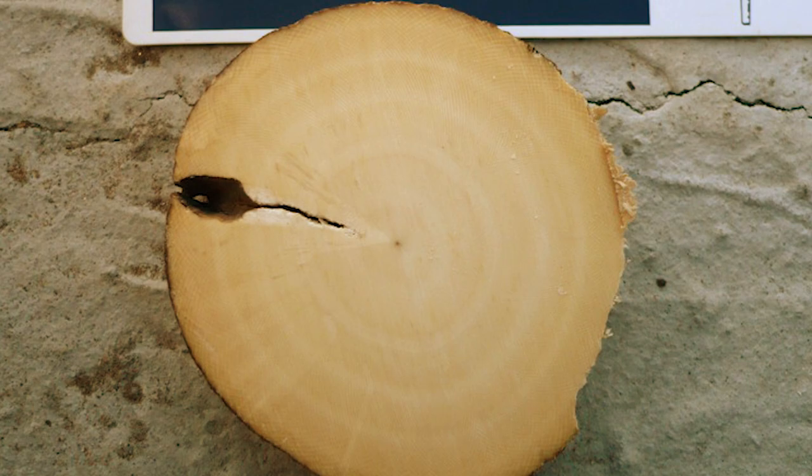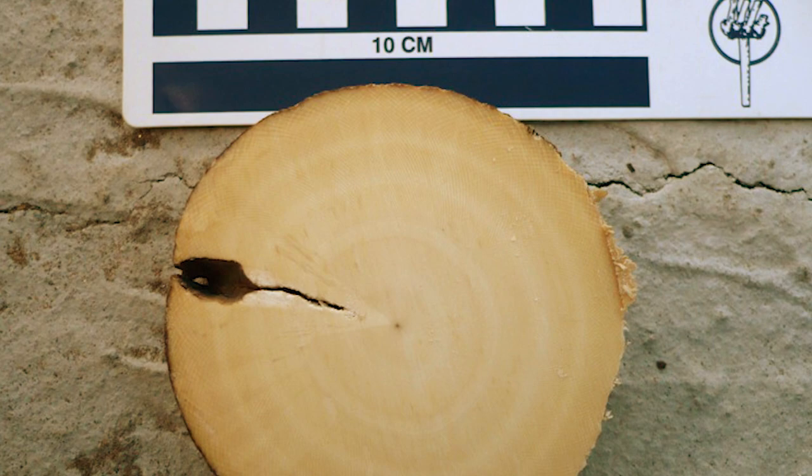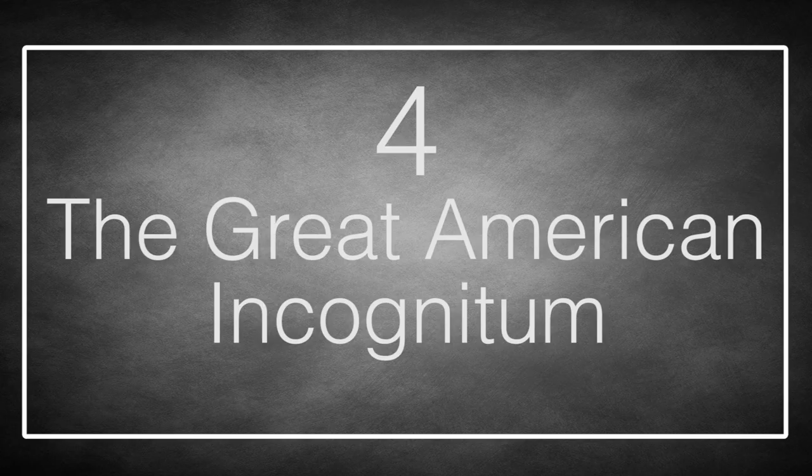A mammoth's tusks continue to grow throughout the animal's life. As they did, so they left daily growth rings, in much the same way as it's possible to determine the age of a tree by counting the rings in its trunk. Scientists can slice through woolly mammoth tusks and count the rings to determine precisely how old the creature was when it died. As the female animal tusks grew more slowly when they were pregnant, it's even possible for researchers to determine how many offspring an individual mammoth gave birth to.